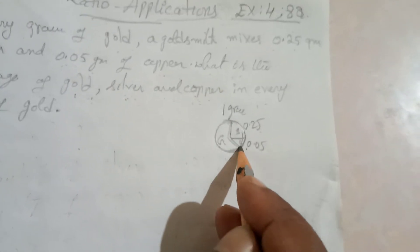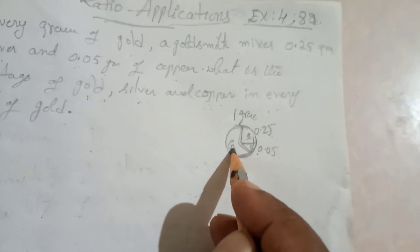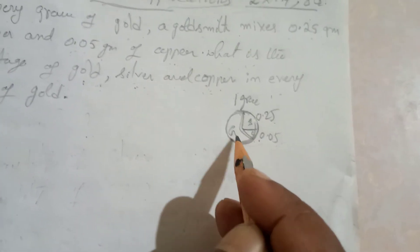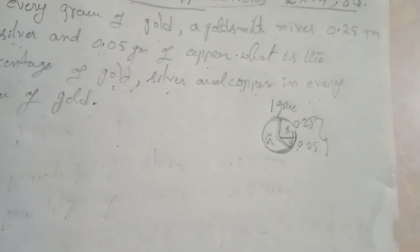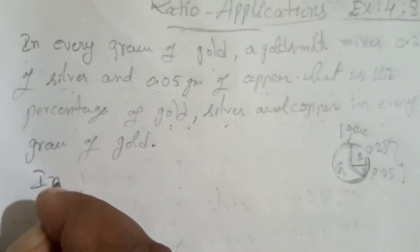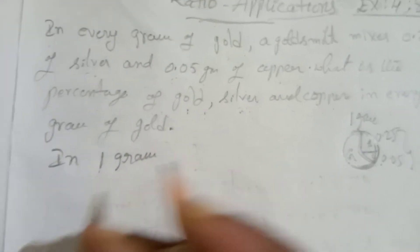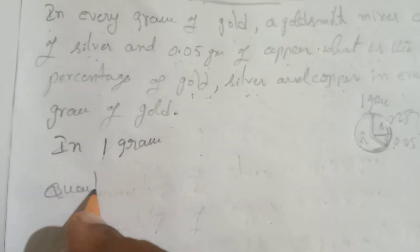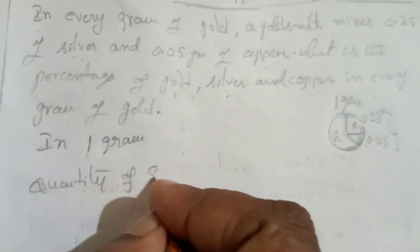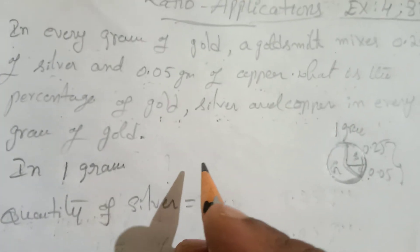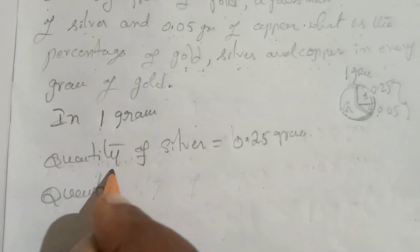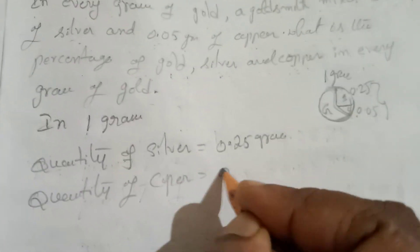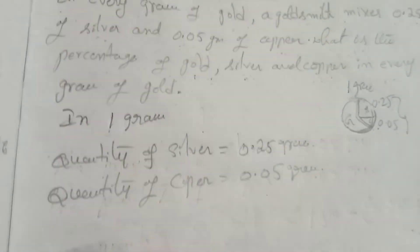Silver is 0.25 grams and copper is 0.05 grams. We know the quantity of gold — we add up the total. The quantity of silver is 0.25. Next, the quantity of copper is 0.05 grams.